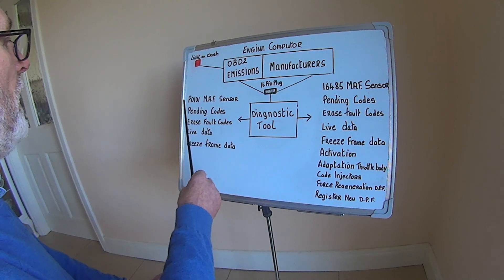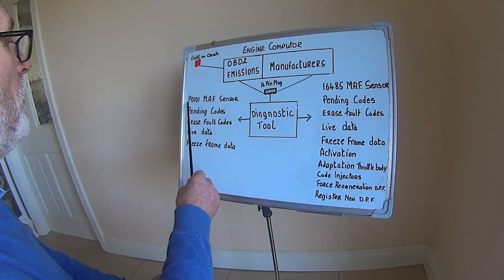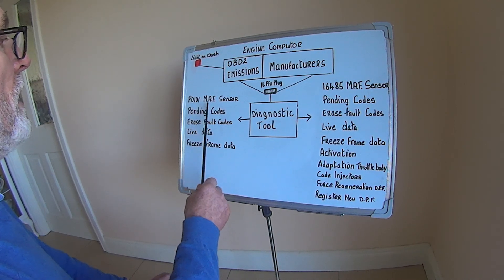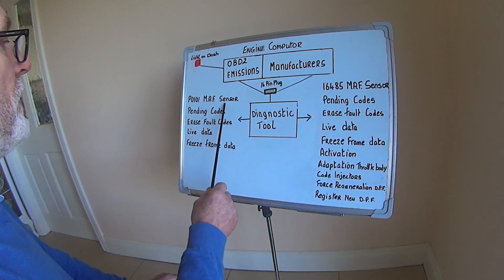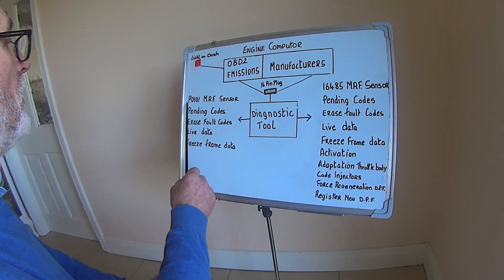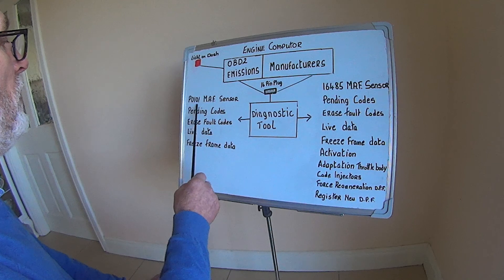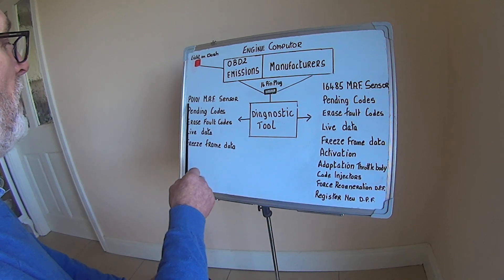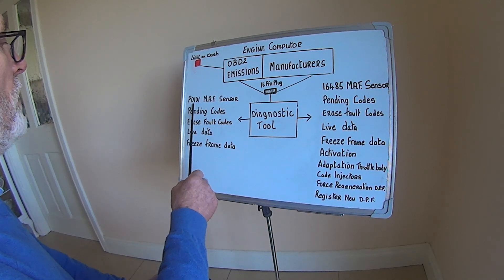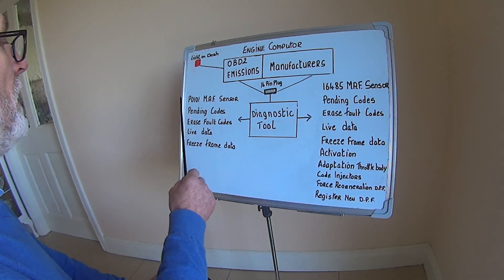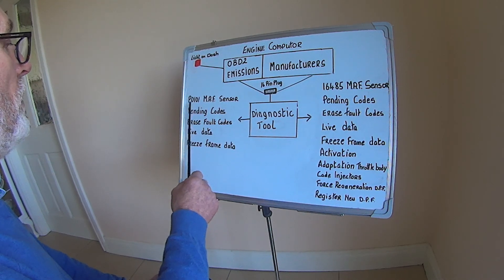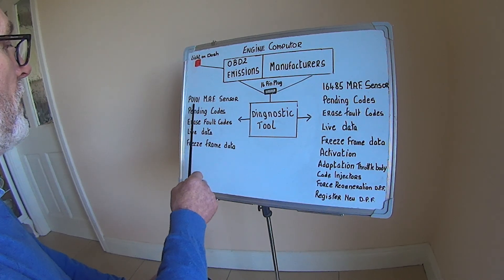Here we have a fault code — P0101, mass air flow sensor. This is a P code; it will always be P, the number will change but it will always be P. These P codes are very easy to research on the internet, so always use the P code to do your research.